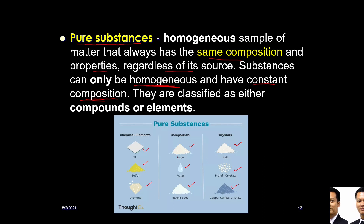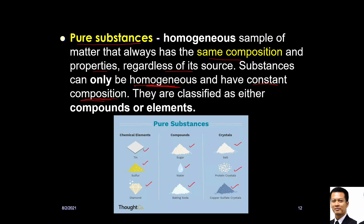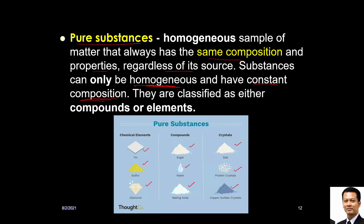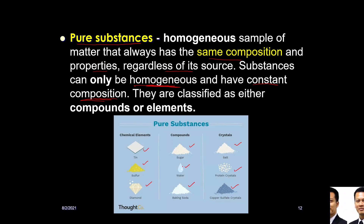Constant composition means the content is always the same. For example, sugar always looks the same — it is always homogeneous. Water always looks the same and has constant composition. Unless the water is contaminated by soil or dirt particles, then it is no longer a pure substance because its composition has changed.